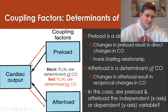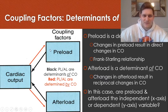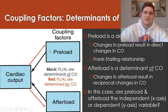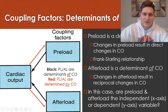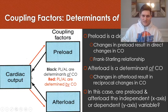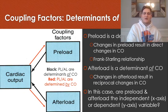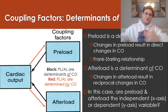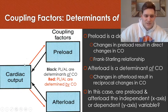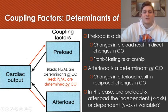Preload is a determinant of cardiac output because when there is an increase in preload, there is an increase in venous return, therefore an increase in sarcomere length of cardiac muscle, which helps to increase stroke volume and therefore cardiac output. This is known as the Frank-Starling relationship. It also works in the opposite direction — a decrease in preload leads to a decrease in stroke volume and cardiac output.